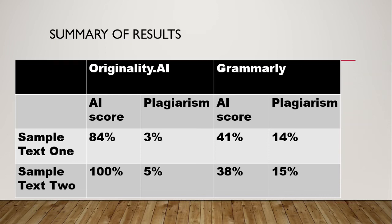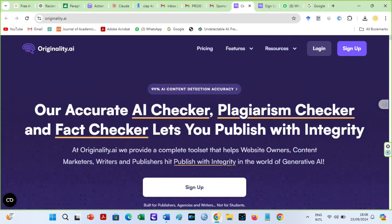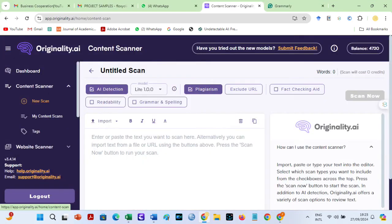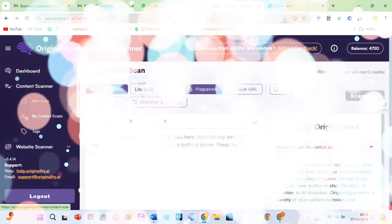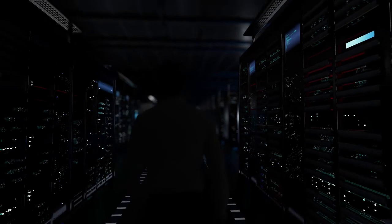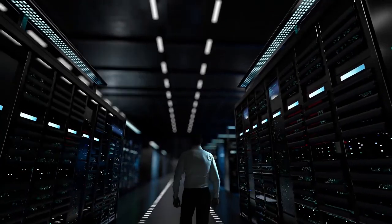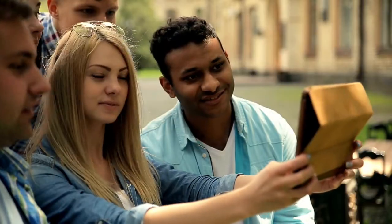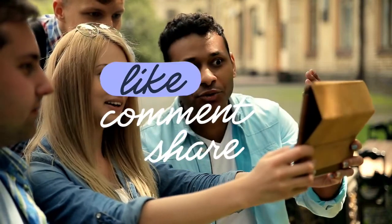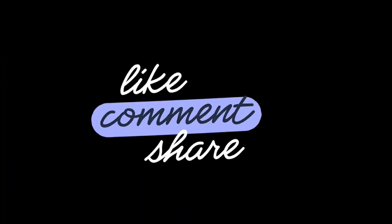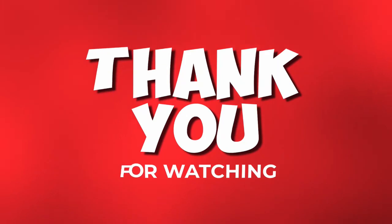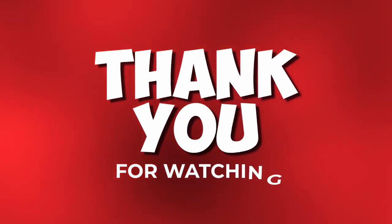Grammarly places more emphasis on language quality than deep AI analysis, making it a good option especially for grammar checks. However, if you want accurate AI detection, I recommend Originality AI. Kindly share your thoughts in the comment section below. If you have any questions or a video you would like me to make, write it in the comment section and I will respond. Thanks for watching. See you next time. Stay safe.